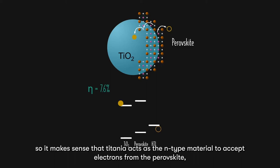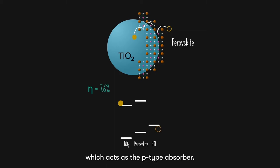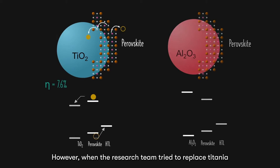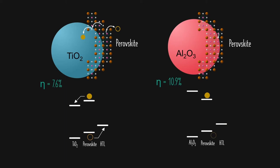Titania has a lower conduction and valence band than perovskite. So, it makes sense that titania acts as the n-type material to accept electrons from the perovskite, which acts as the p-type absorber. However, when the research team tried to replace titanium with alumina, which is practically an insulator, they instead observed an increased efficiency of 10.9%.